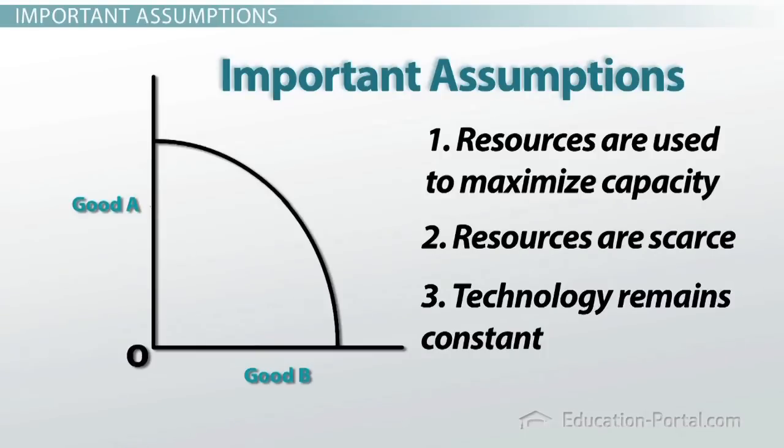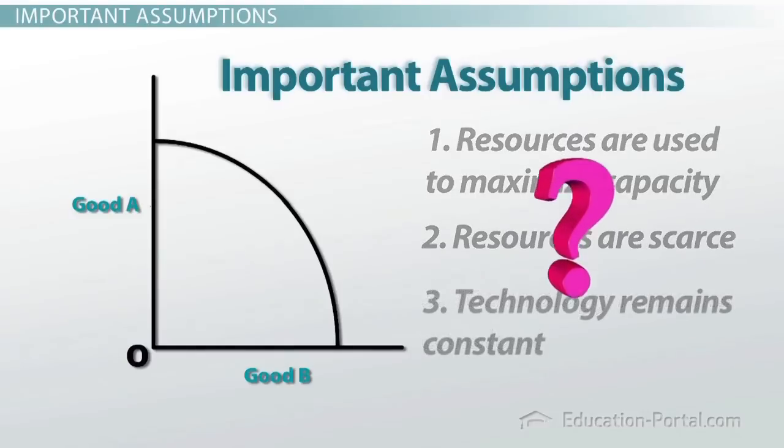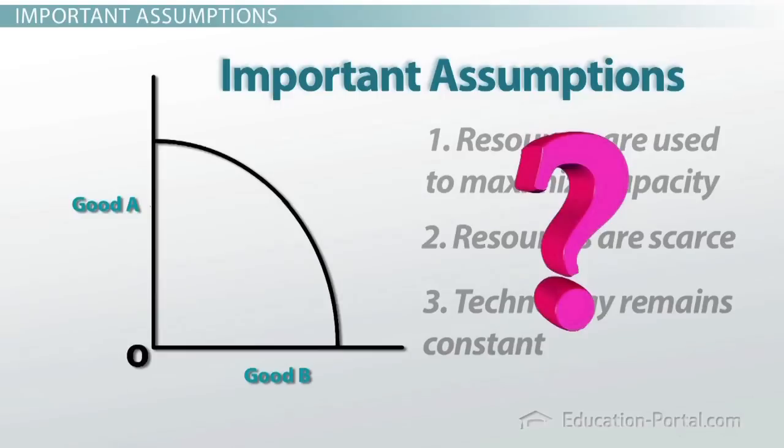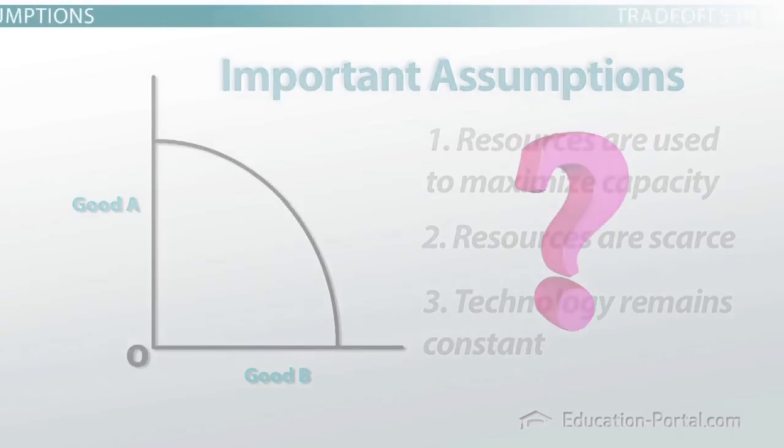We're trying to use our resources to the fullest, but we only have limited or scarce resources. We're also assuming right now that the technology we use to produce our goods isn't changing at all. So, what are we really saying? If you're producing the right combination of two goods, then you're using your resources efficiently. Why is this important?